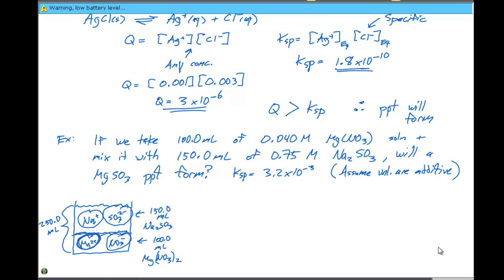So if we set this up, if we think about what our solubility equilibrium expression is going to be, we have MgSO3 as a solid and it's going to be in equilibrium with Mg2+ ions in solution plus SO3 2- ions in solution. Our Q here is going to equal the concentration of Mg2+ times the concentration of SO3 2-.